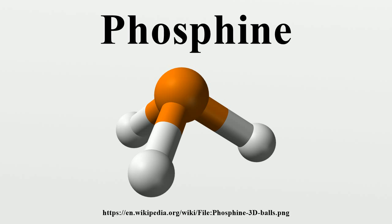Proton exchange proceeds via a phosphonium ion in acidic solutions and via PH2⁻ at high pH, with equilibrium constants Kb = 4×10⁻²⁸ and Ka = 41.6×10⁻²⁹. Phosphine burns producing a dense white cloud of phosphorus pentoxide: 2PH3 + 4O2 → P2O5 + 3H2O. Preparation and Occurrence: Phosphine may be prepared in a variety of ways. Industrially, it can be made by the reaction of white phosphorus with sodium or potassium hydroxide, producing sodium or potassium hypophosphite as a byproduct: 3KOH + P4 + 3H2O → 3KH2PO2 + PH3. Alternatively, the acid-catalyzed disproportionation of white phosphorus yields phosphoric acid and phosphine.